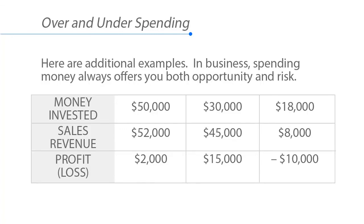Here's an additional example. If you invest $50,000 and generate $52,000 in sales revenue, the profit is $2,000. If you invest $30,000 and generate $45,000 in sales revenue, the profit is $15,000. If you invest $18,000 and only generate $8,000, the profit is minus $10,000.